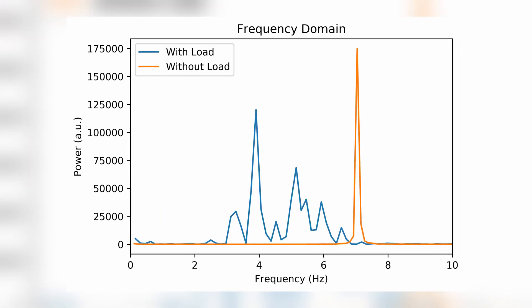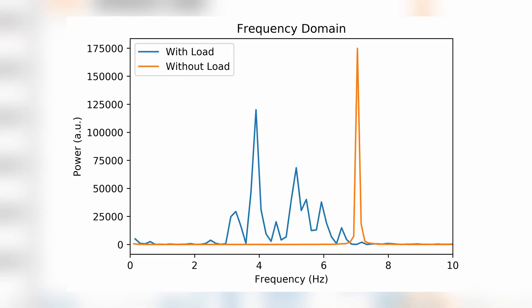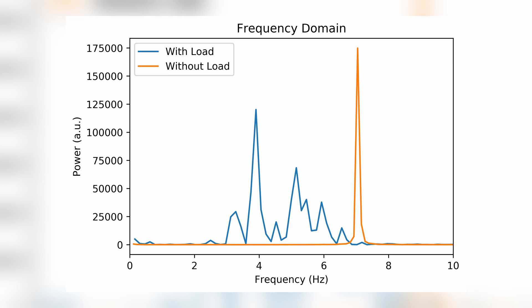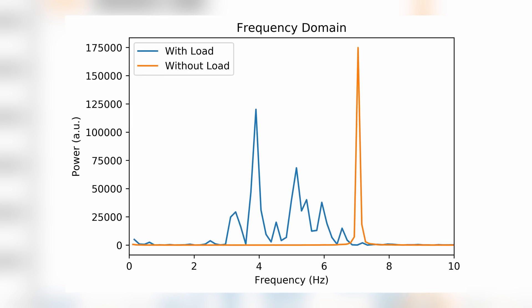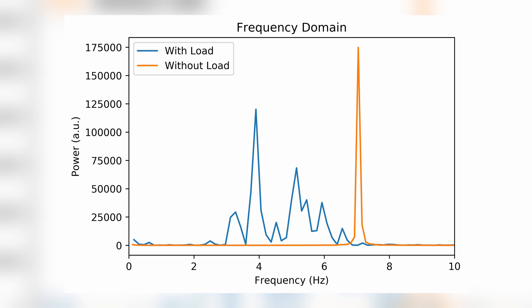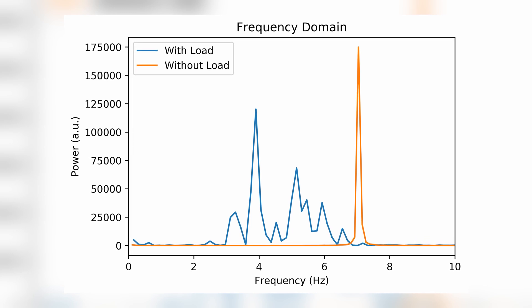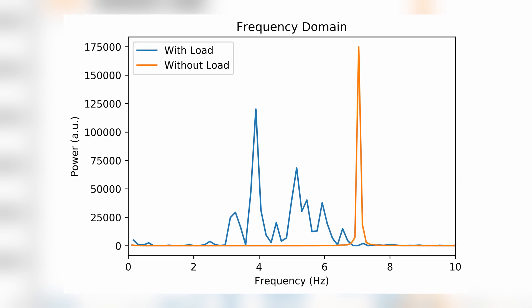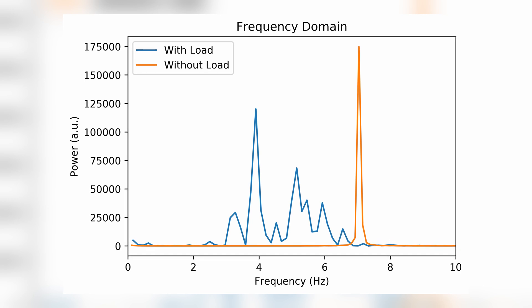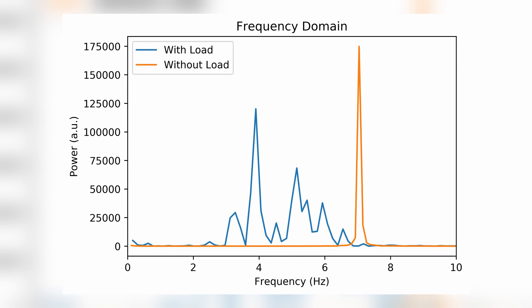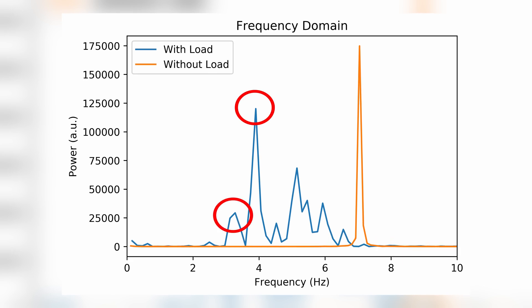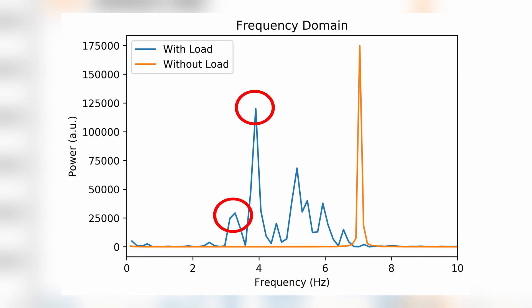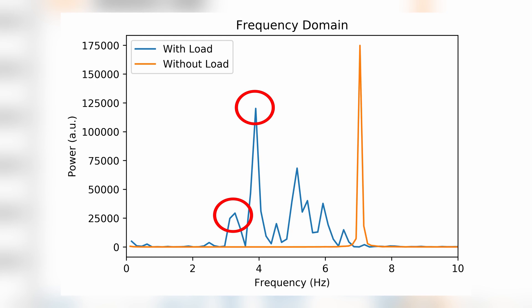To see the slowdown more clearly, we can perform a fast Fourier transform and look at the rotation in frequency domain. When there is no load, the roller rotates faster with a higher frequency, and the frequency is very well defined. However, when we have the load, the frequency is no longer well defined, and we can see several lower peaks that corresponds to the slowdown. All the frequencies are below the no load frequency.